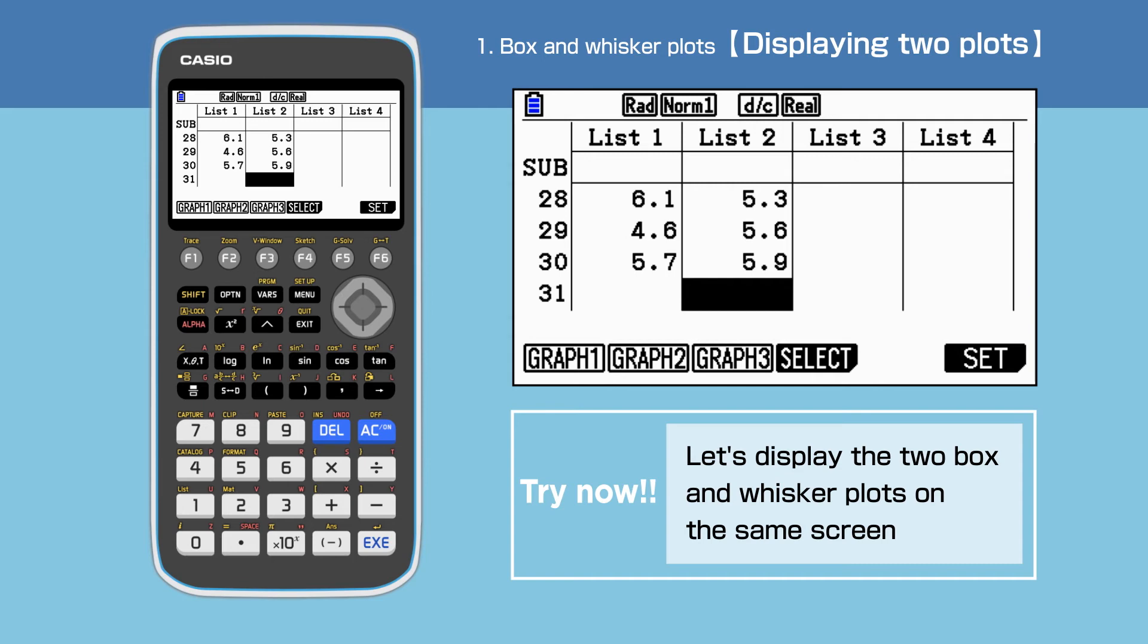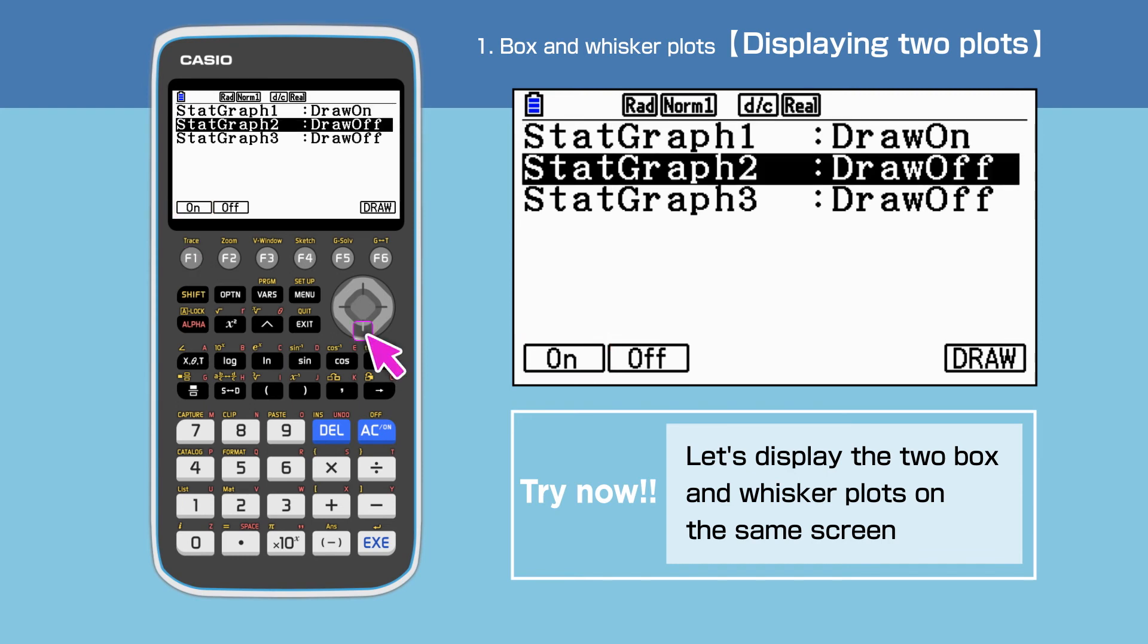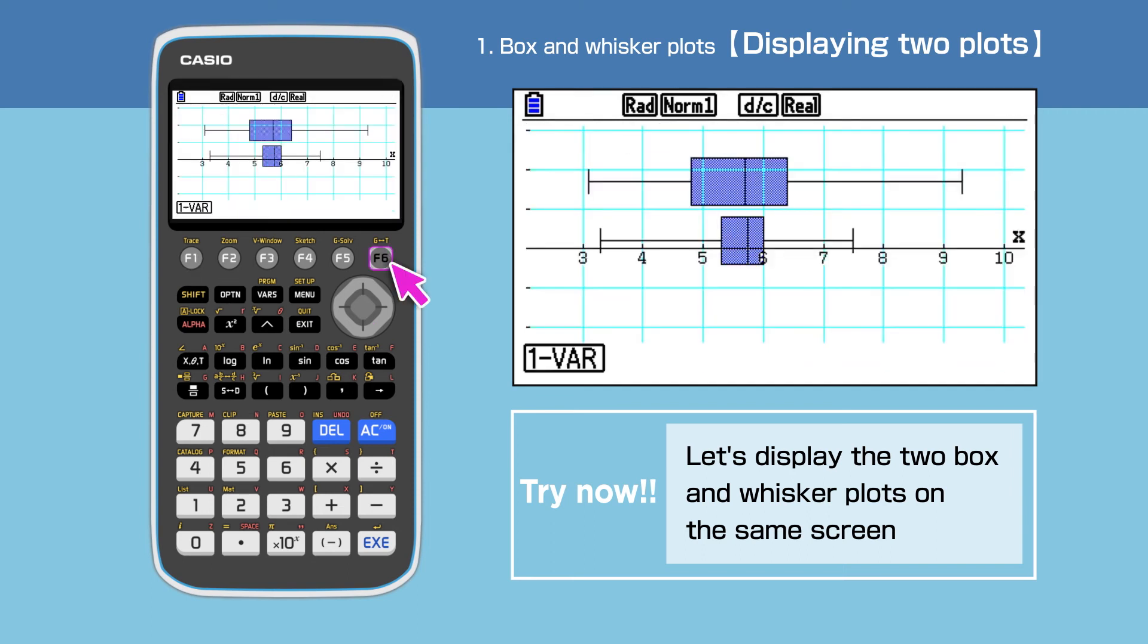Now, let's place the two box and whisker plots on the same screen. Press F4 to open graph select screen, and then turn on the draw on for both stat graph 1 and 2. Press F6 to draw. The two box and whisker plots are displayed vertically.